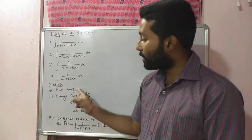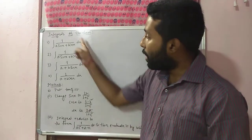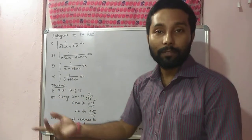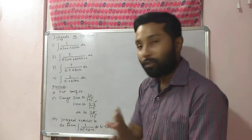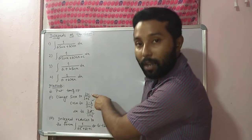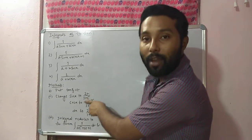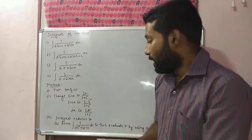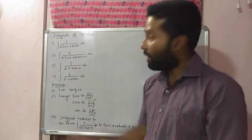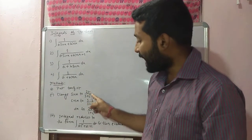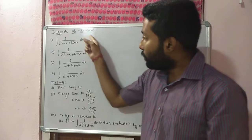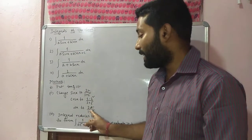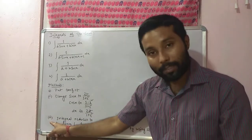In the first step, put tan(x/2) equal to t. In the next step, check whether the integral contains sin x, cos x, or both. Change sin x to 2t/(1+t²), cos x to (1-t²)/(1+t²), and don't forget to change dx to 2dt/(1+t²) as well.